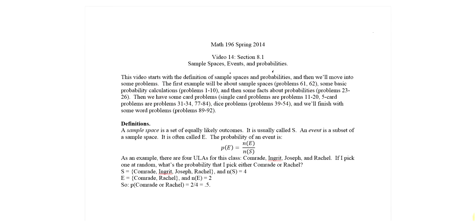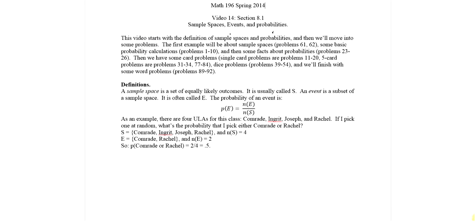Probability — what's going on here, and why does this have to do with Chapter 7 too? We will define first what a sample space is. This is a set of equally likely outcomes, usually called S. An event is a subset of a sample space, usually called E. The probability of an event is the number of things in the event E divided by the number of possibilities.